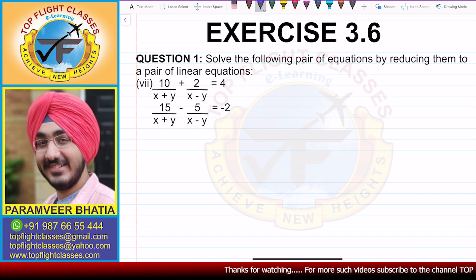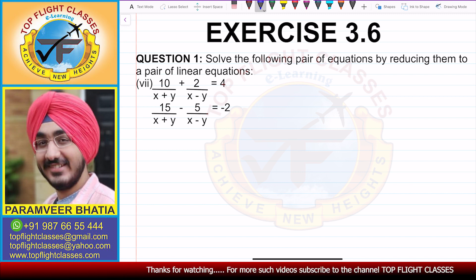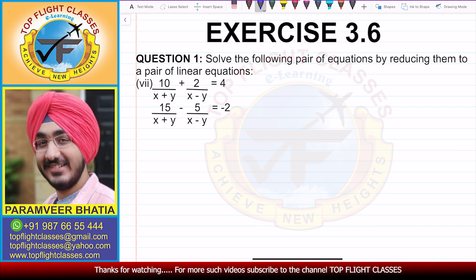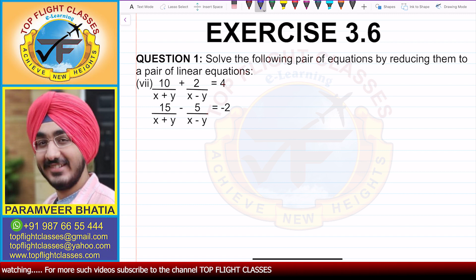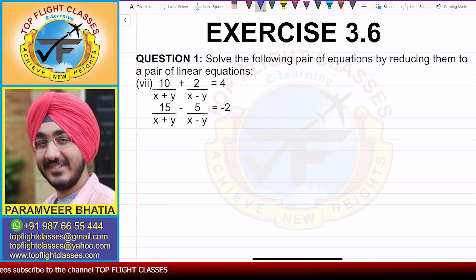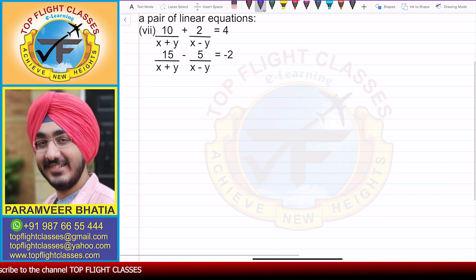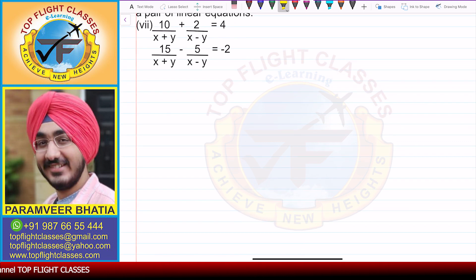The seventh part is: 10/(x+y) + 2/(x-y) = 4, and 15/(x+y) - 5/(x-y) = -2. In this case you can clearly see one factor is (x+y) and the other factor is (x-y).